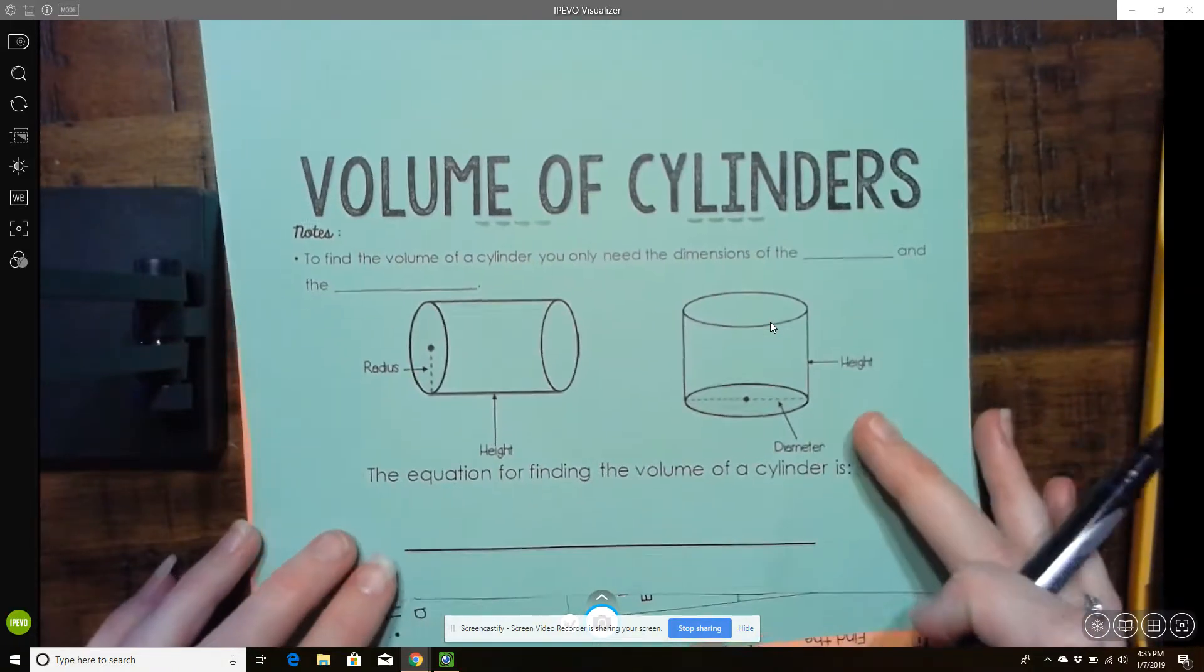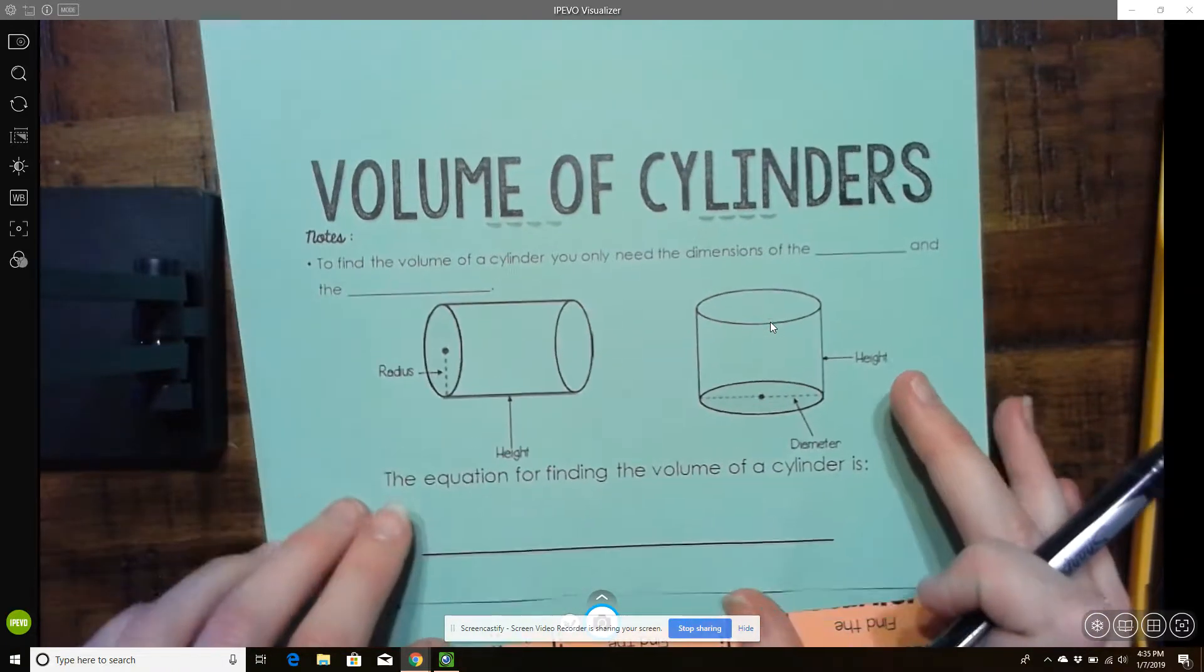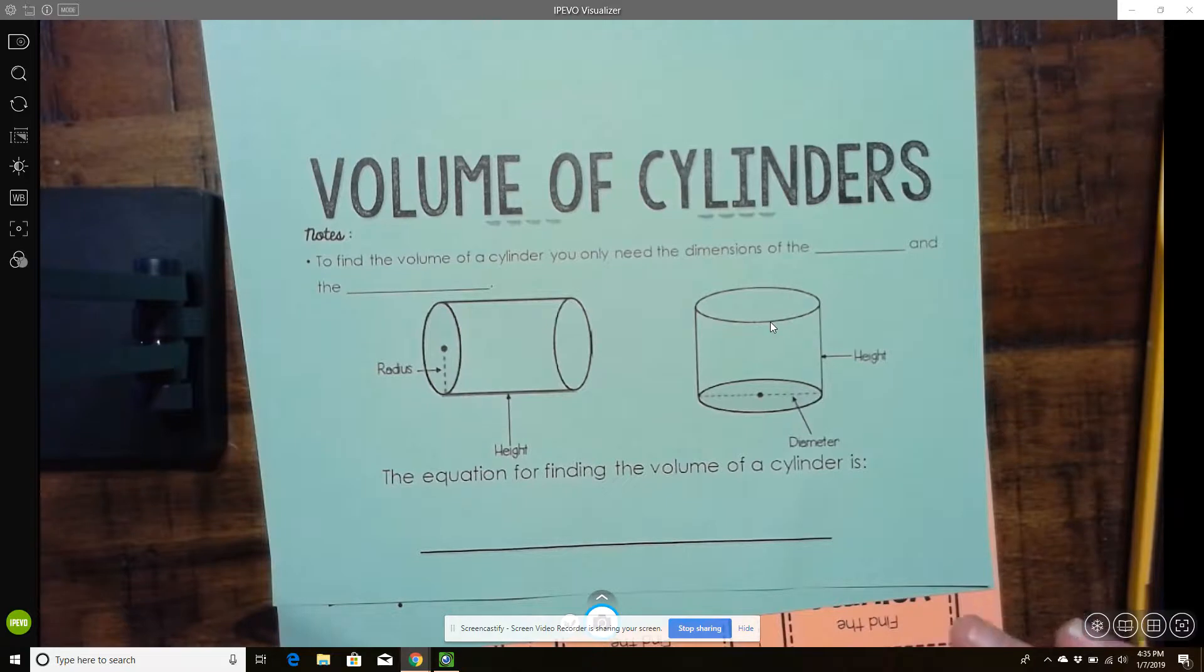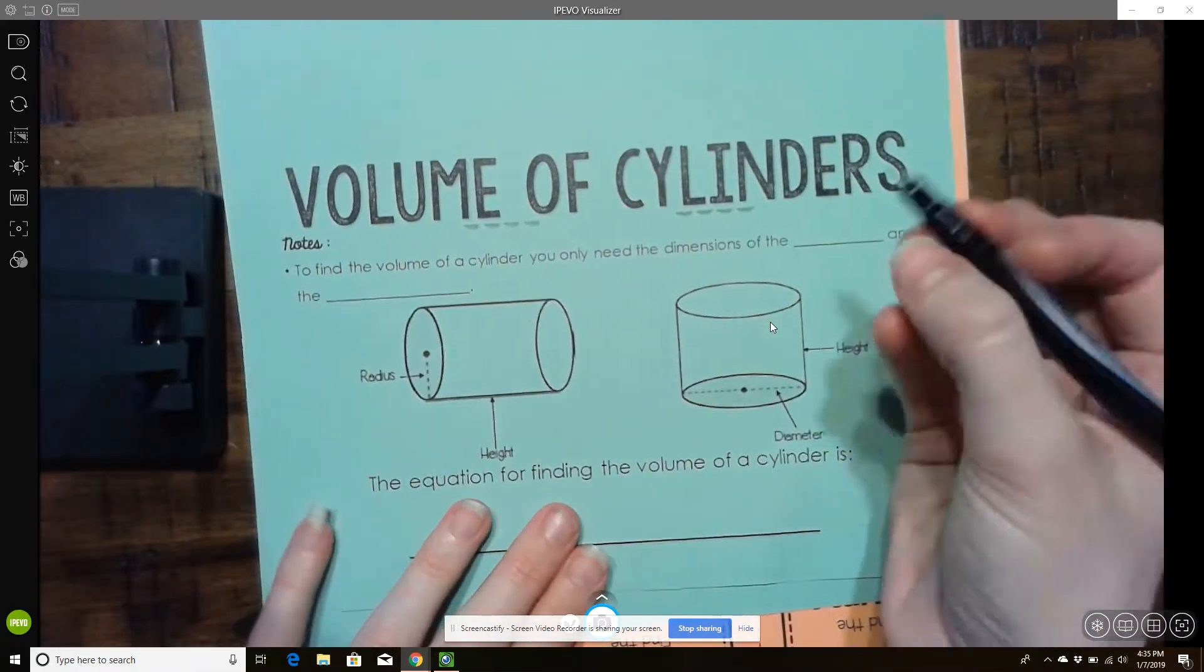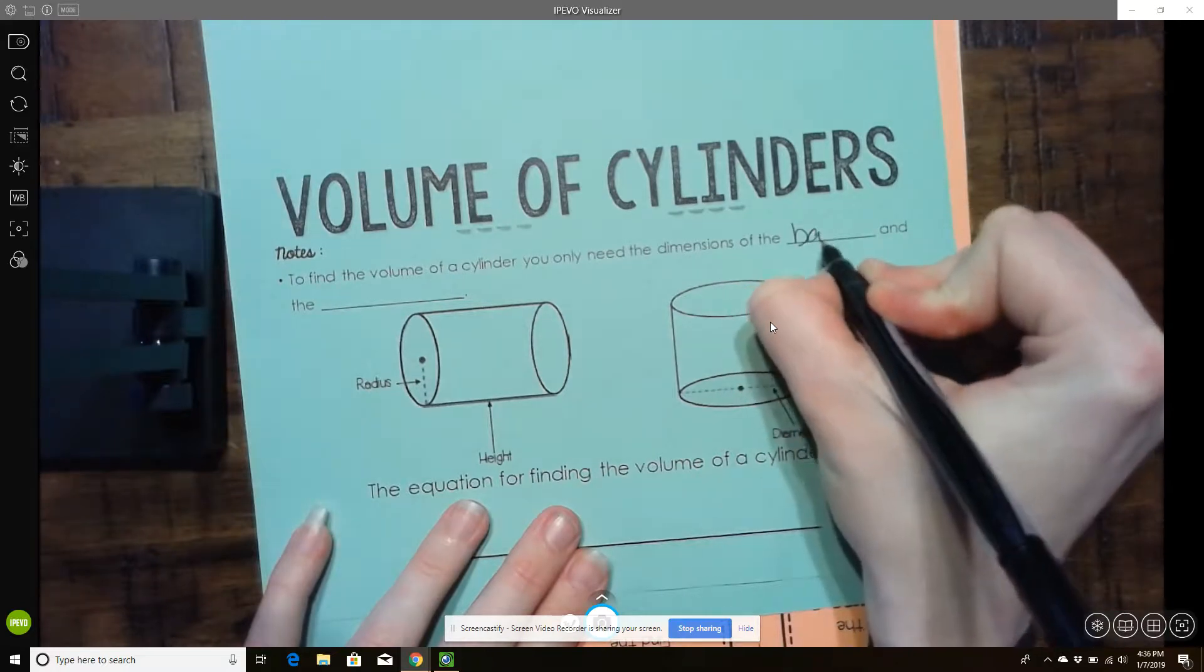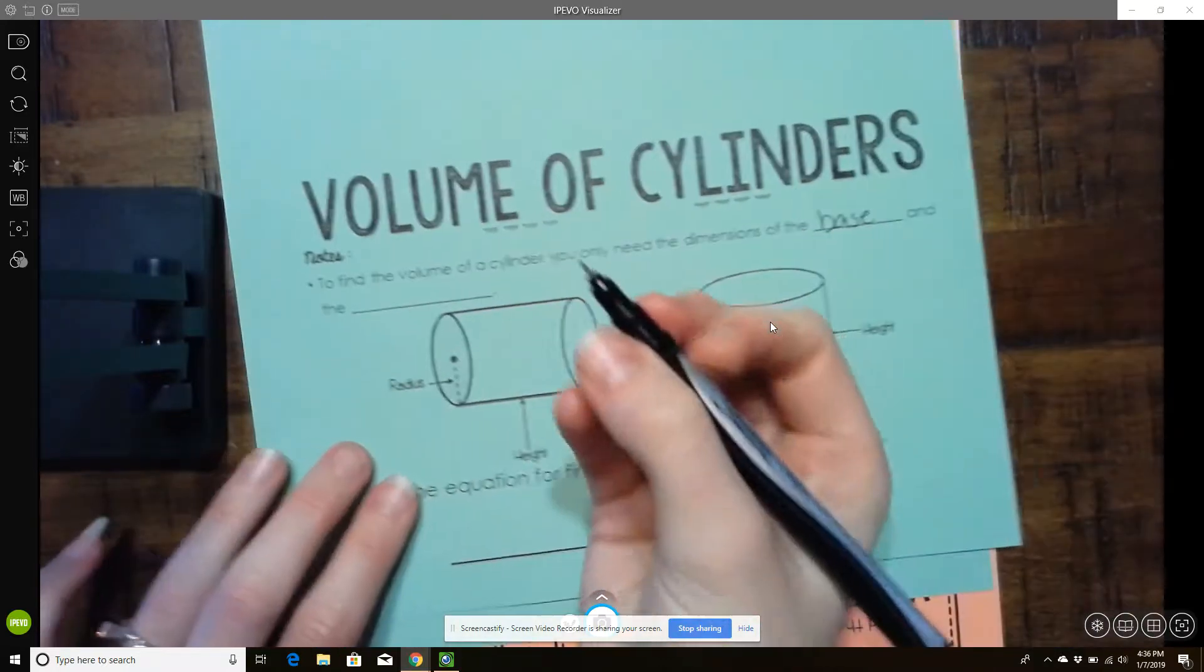This video is for Lesson 6-4. We're going to start talking about the volume of cylinders. So to find the volume of a cylinder, you only need the dimensions of the base and the height.